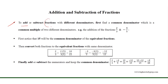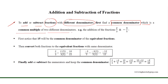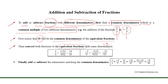To add or subtract fractions with different denominators, first find a common denominator, which is a common multiple of the two different denominators. For example, consider the addition of the fractions 2 over 3 and minus 4 over 5. We can notice that 15 will be the common denominator, considering the different denominators 3 and 5. Then convert both fractions to equivalent fractions with the same denominator 15, where 15 is the common multiple of 3 and 5.